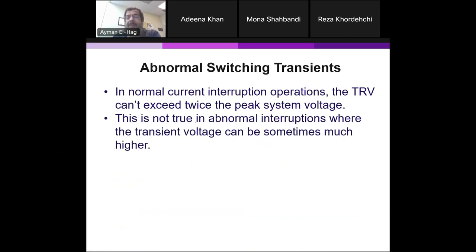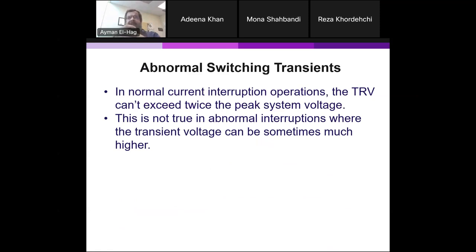For normal interruption, the transient recovery voltage cannot exceed twice the peak system voltage level. When we have abnormal interruptions in the power system, the voltages can go to much higher levels. One difference between lightning and switching is that lightning does not depend on the voltage level of the system — whether it hits a distribution or transmission system, the amount of overvoltage doesn't depend on the voltage level. Most switching events, on the other hand, do depend on voltage level. But there are certain types of switching that do not depend on the system voltage level.